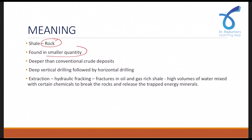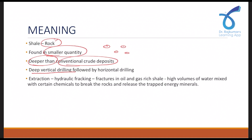Shale oil is found in very small quantities — in patches, scattered across the earth's crust. They are also placed deeper than conventional crude deposits. To extract shale oil, we first have to drill vertically into the earth's surface and then drill horizontally. The method used here is the hydraulic fracking method, where fractures are created using a mixture of sand, chemicals, and water, and through these fractures the shale oil is extracted.